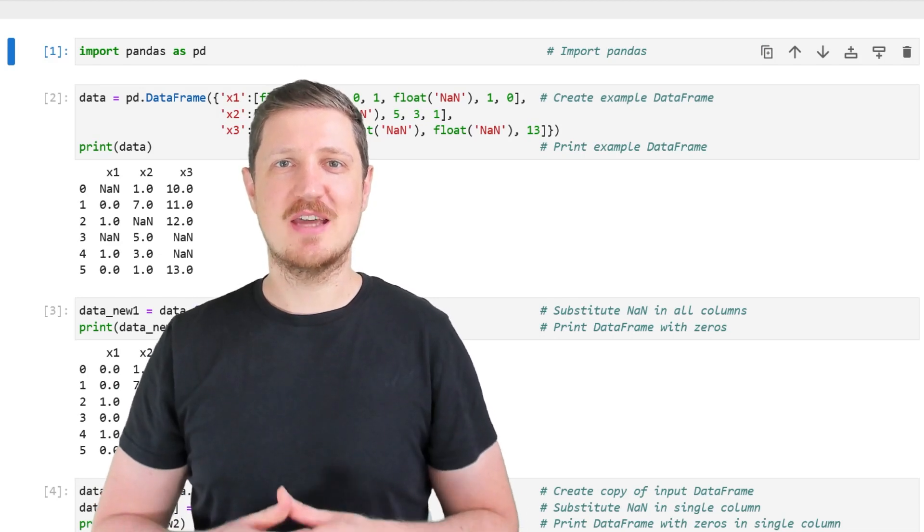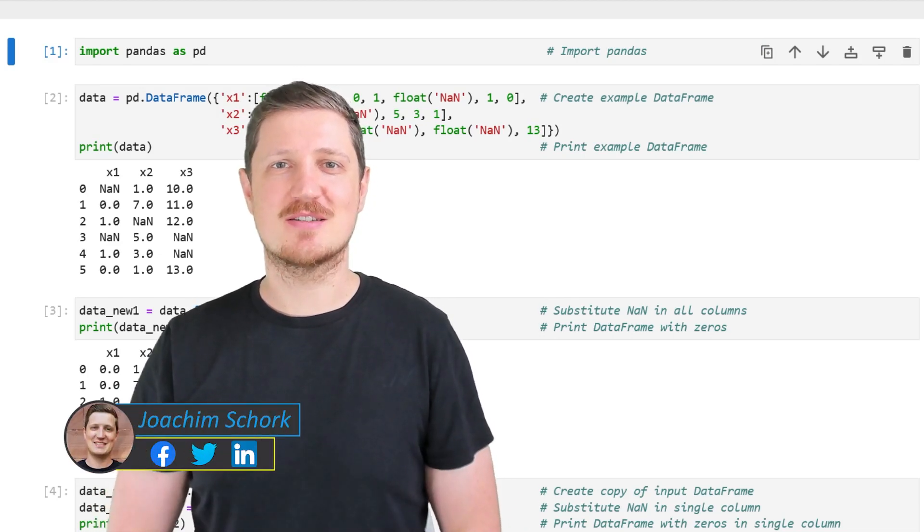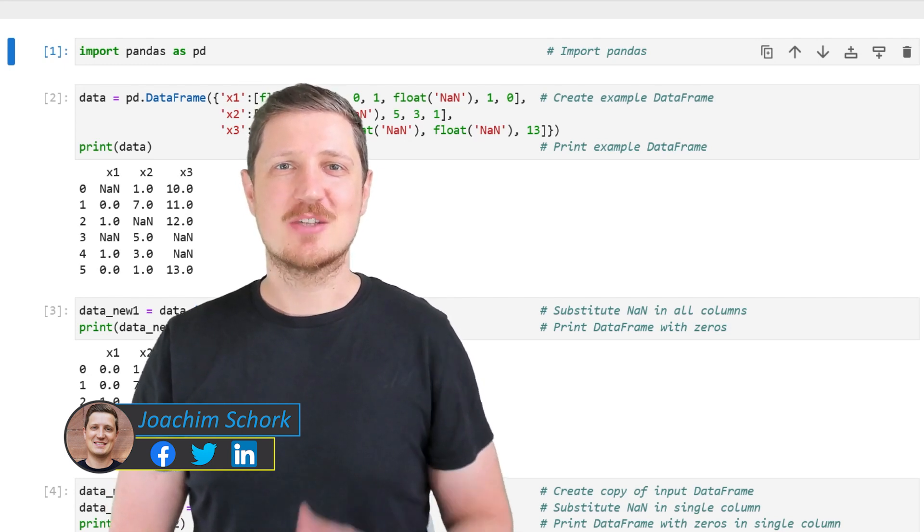This video explains how to replace NAN values in a pandas data frame by the value 0 using the Python programming language. So without much talk, let's dive into the Python code.